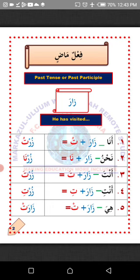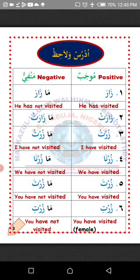La'allaka fahimt? I hope you understand. MashaAllah. Udrus — learn. Walahiz — observe at the same time. Udrus — study. Walahiz — and observe at the same time. Mujabun — positive. Manfiyun — negative.